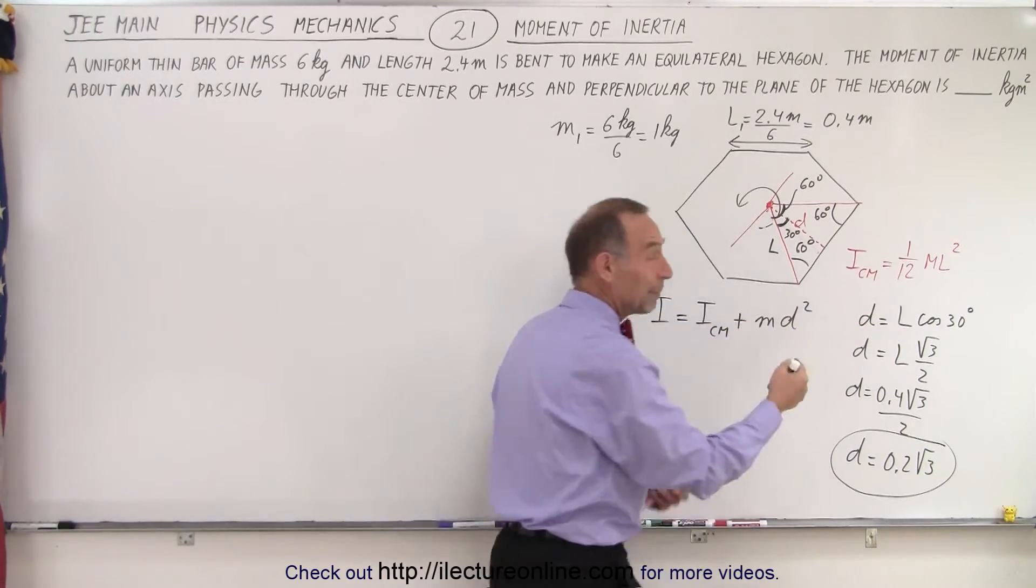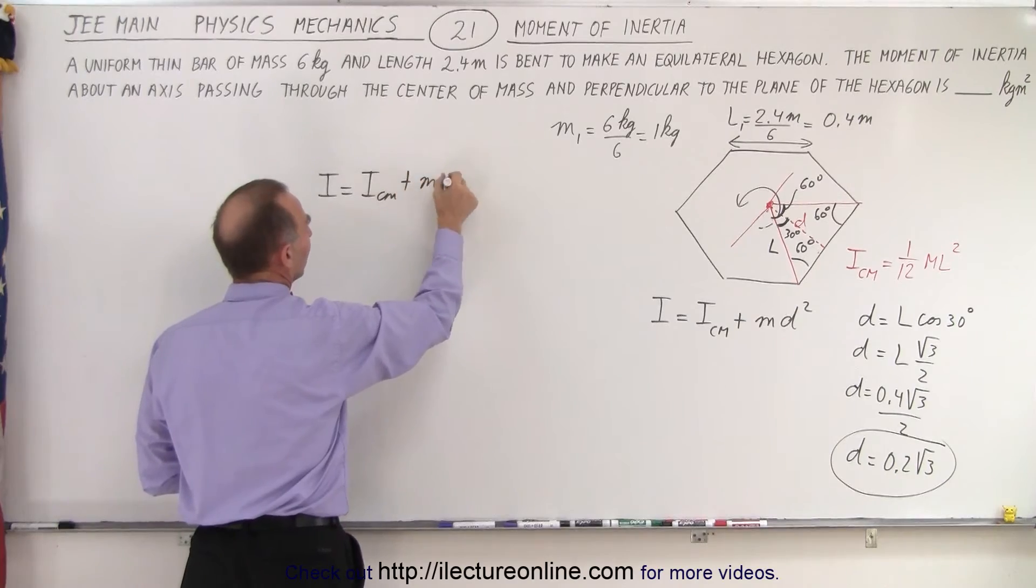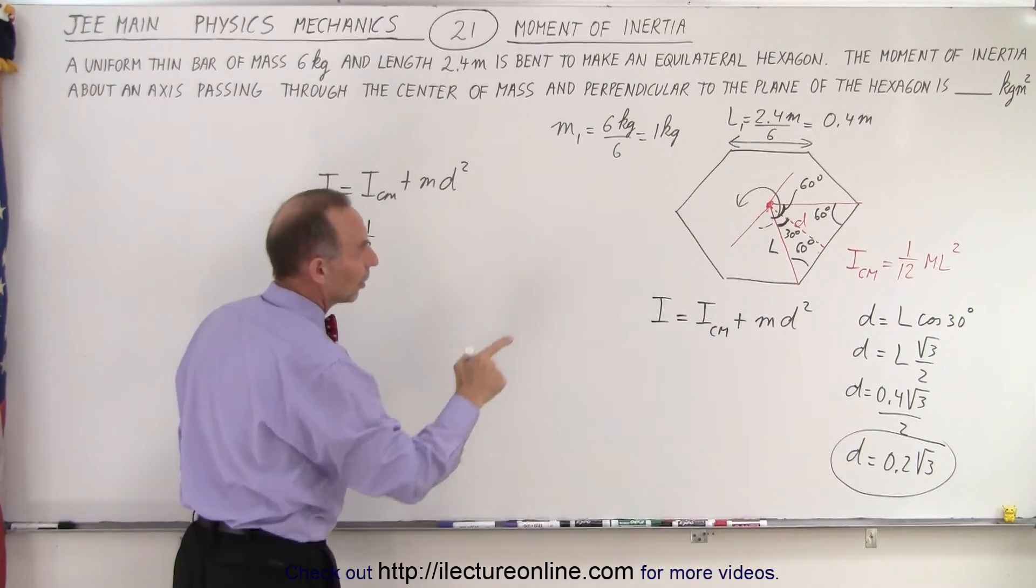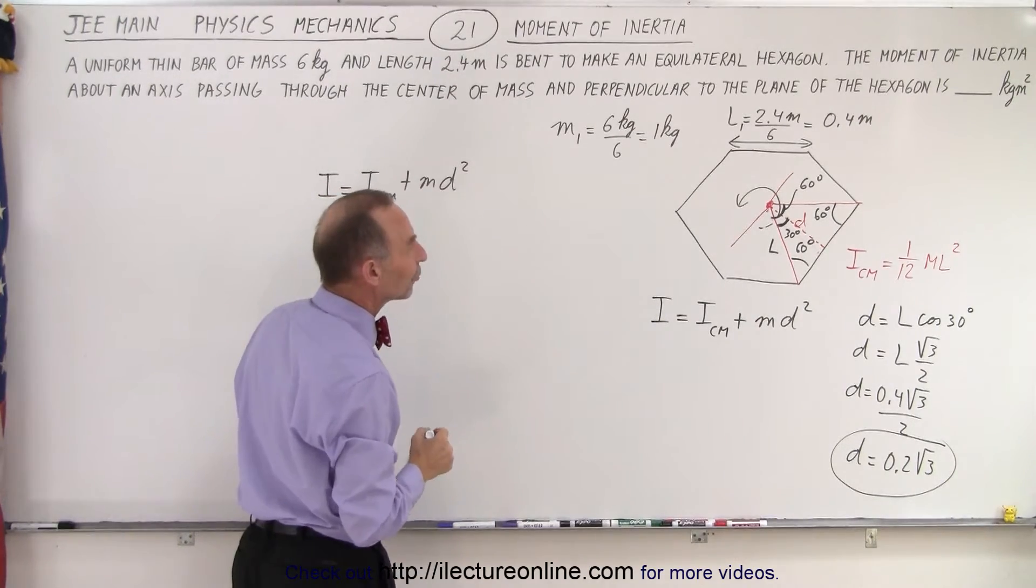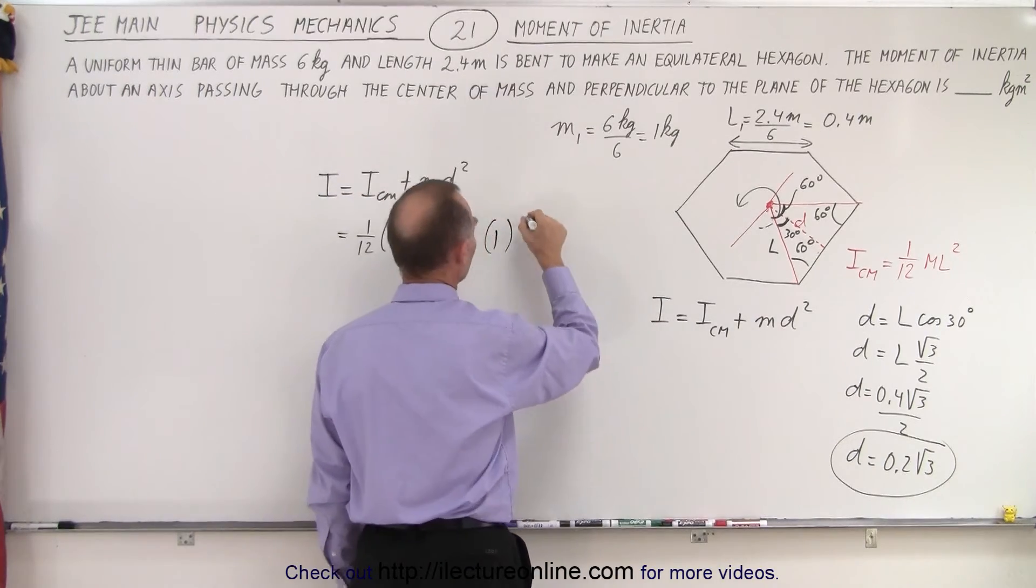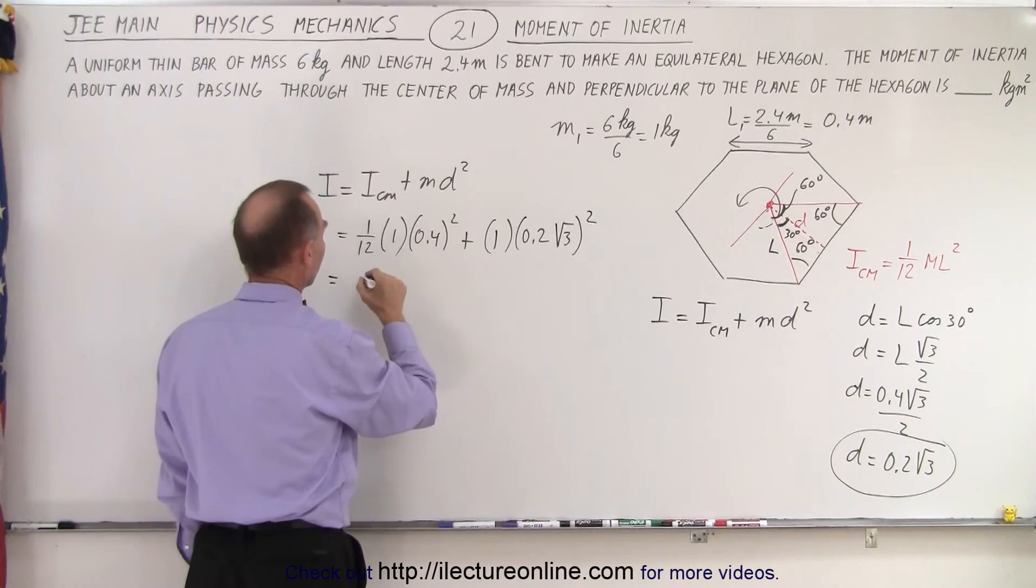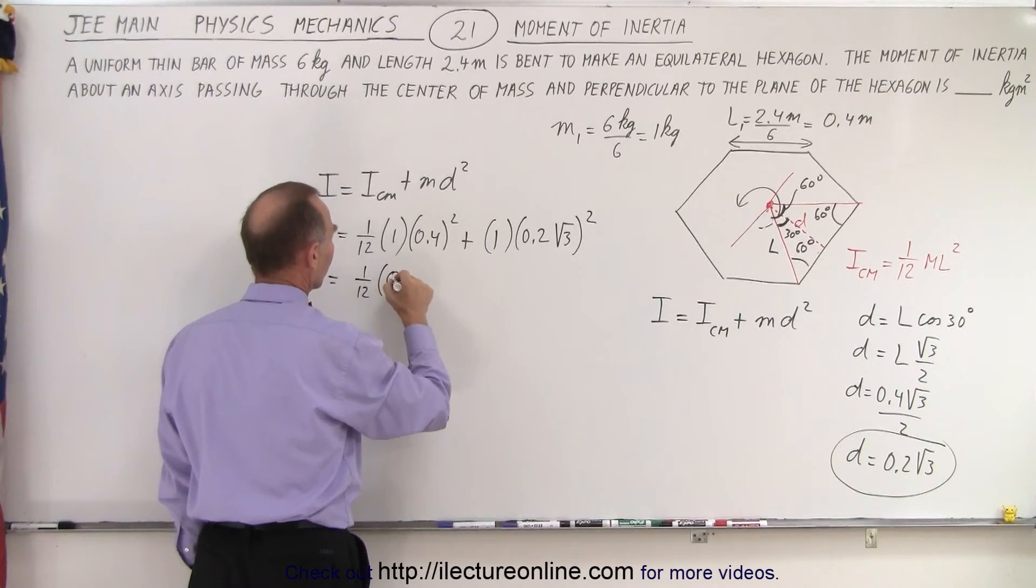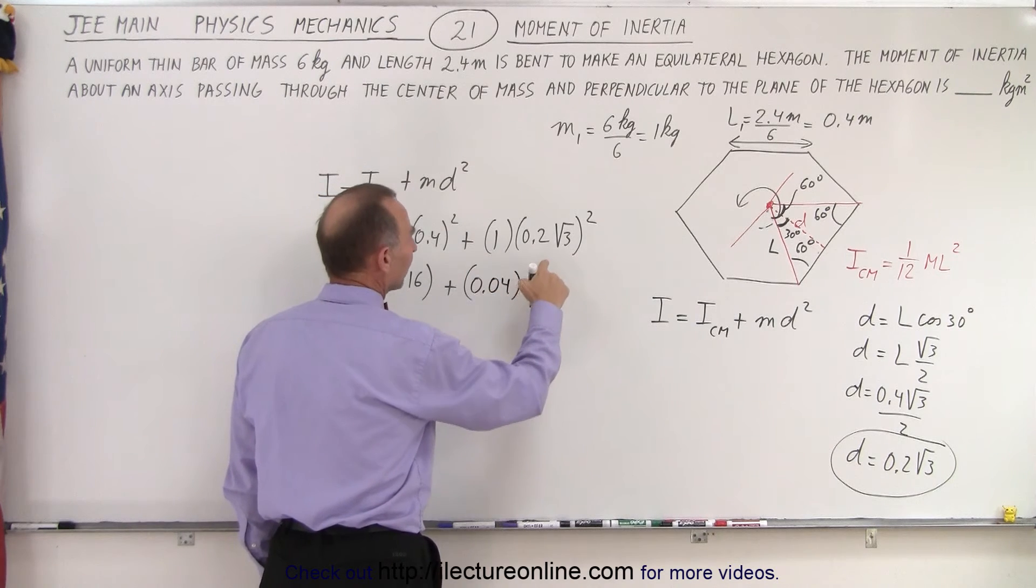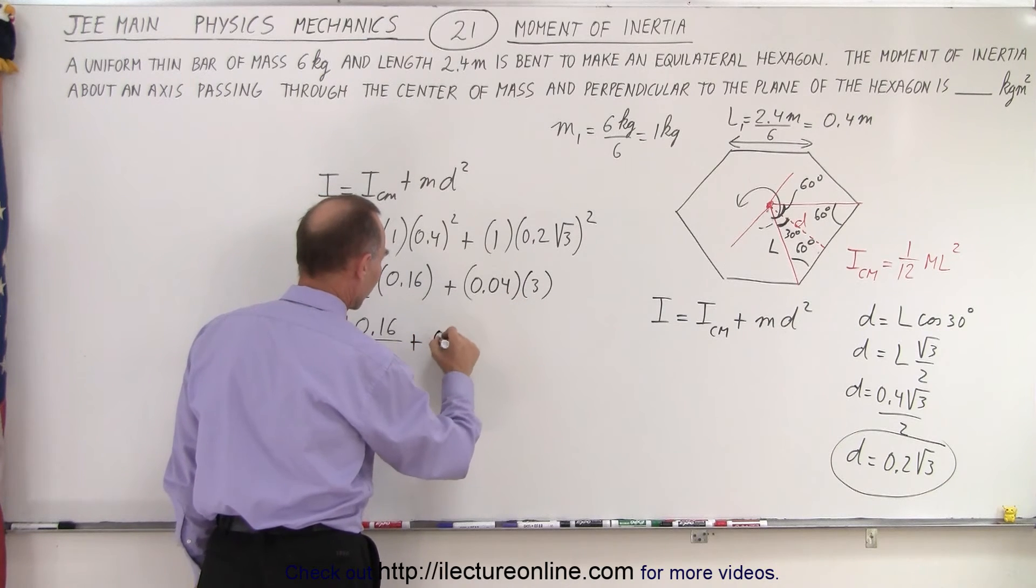We have a value for m, we know the center mass of a bar rotating about its center, and now we can simply calculate all these values. So I equals I center mass plus md squared, which is the parallel axis theorem. We definitely need to remember that - comes up a lot in these tests. That would be 1/12 times the mass of a bar which is 1, times L squared, and L is 0.4 squared, plus the mass of the bar which is 1, times d squared which is 0.2 times the square root of 3 quantity squared. So now we just have to simplify that. So this is equal to - that is 1/12 times 0.4 squared, 0.16, plus here we have 0.2 squared which is 0.04 times the square root of 3 squared which is simply times 3. So this is equal to 0.16 divided by 12 plus 0.4 times that would be 0.12.